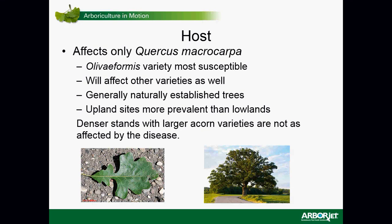It does affect other varieties besides oliviformis, including macrocarpa, but it seems to affect oliviformis more than the others. Generally, naturally established trees are affected. People ask about cultivars grown in nurseries — even like swamp white oaks — and you're generally not going to see too many symptoms of bur oak blight on those. Upland sites are generally more prevalent than lowlands, and denser stands with larger acorn varieties generally aren't as affected.